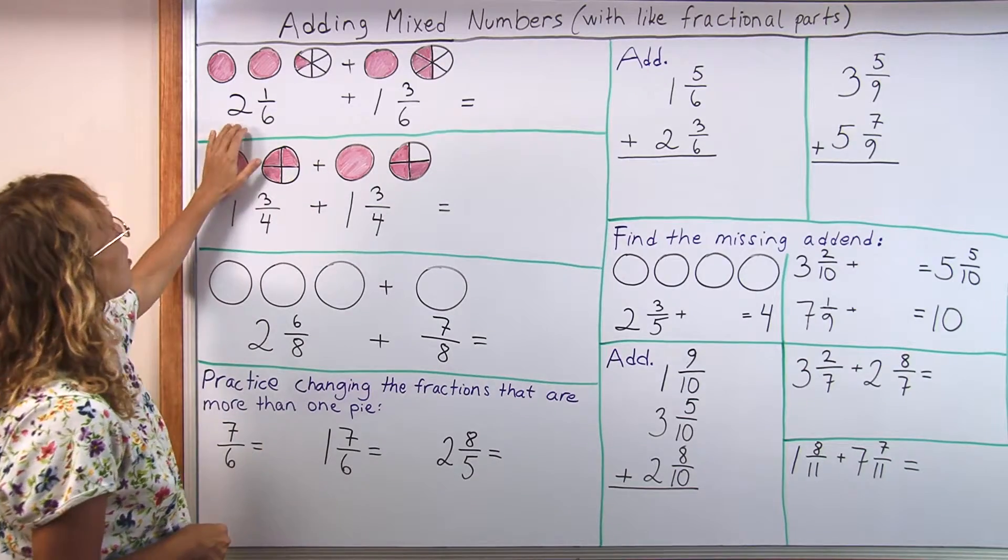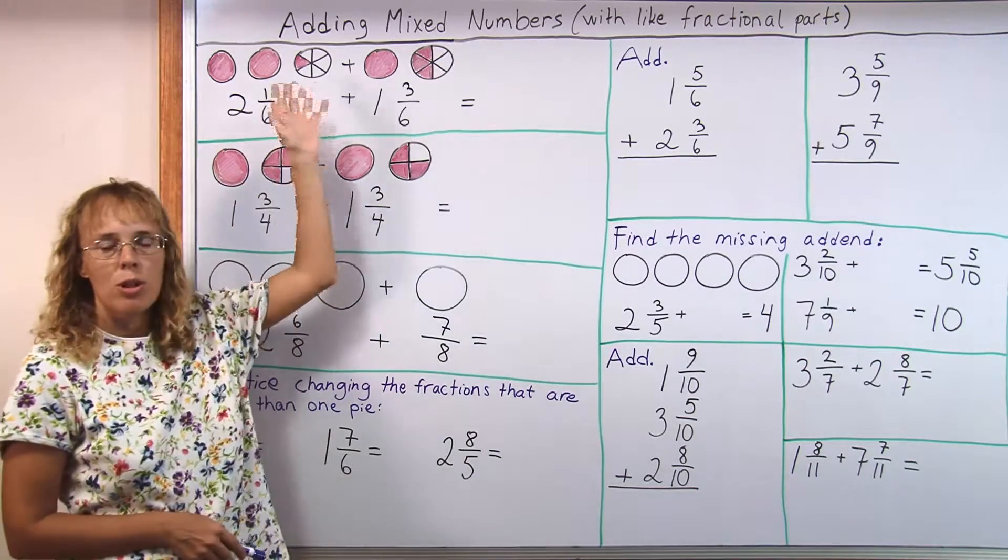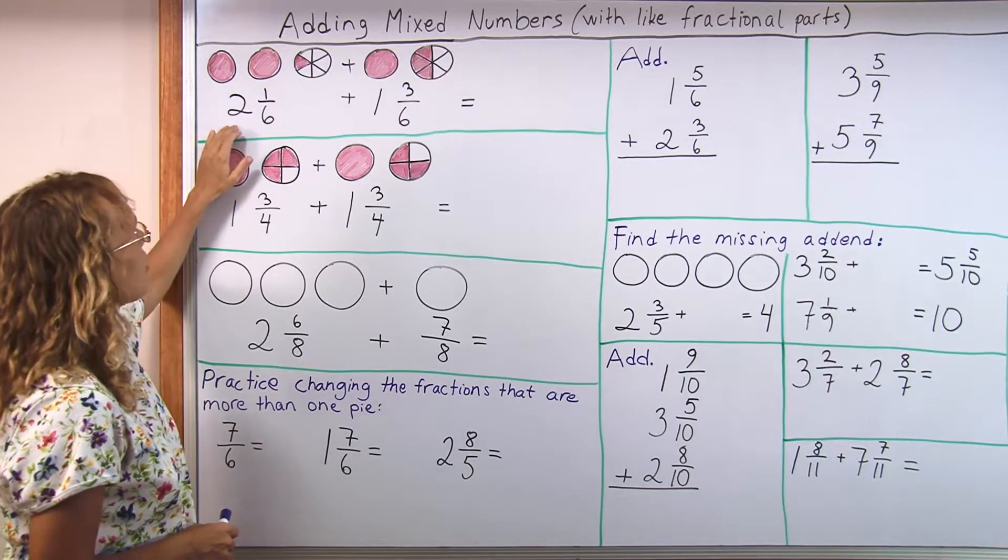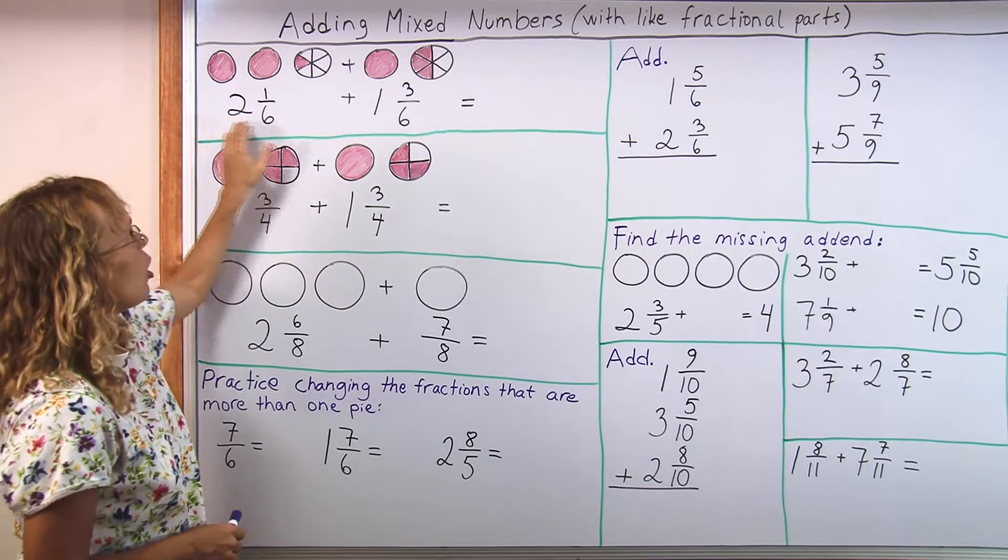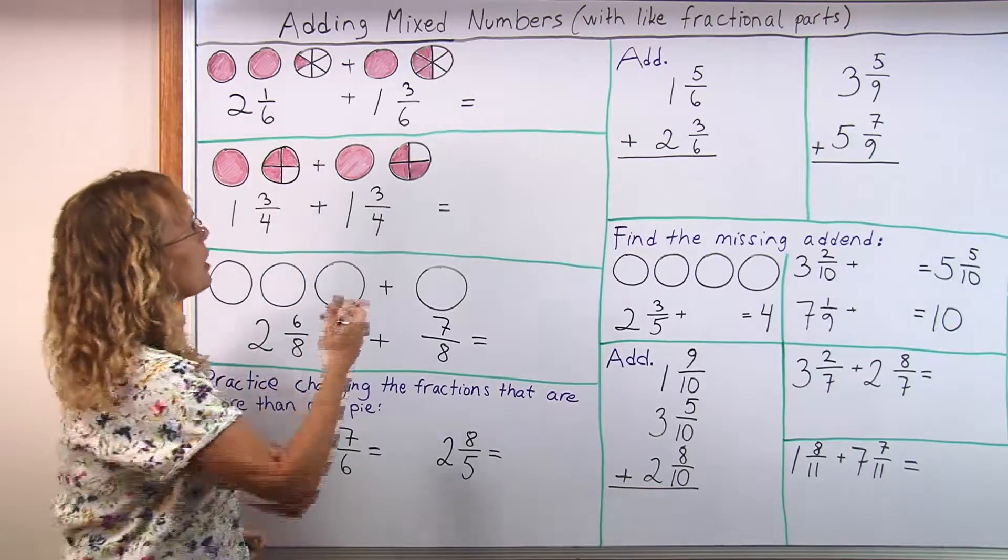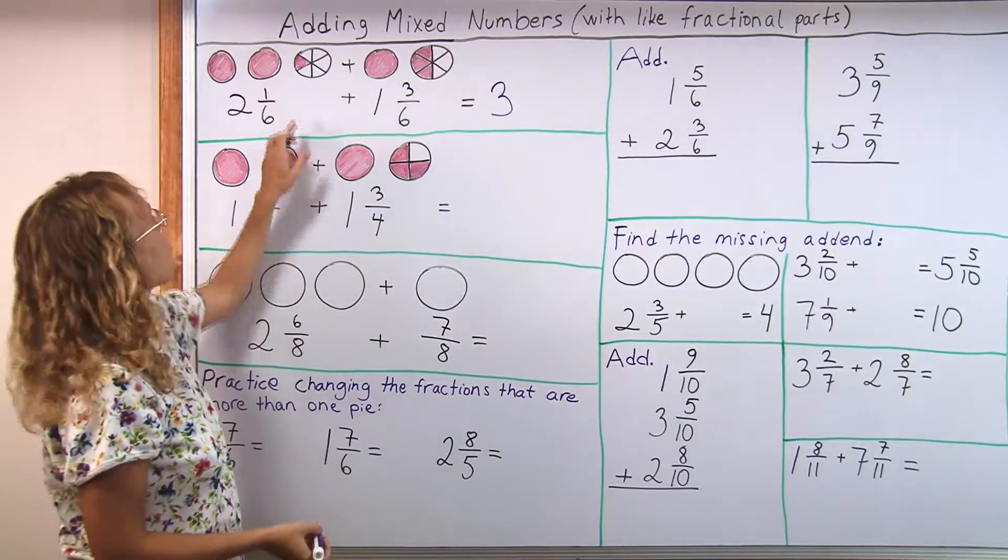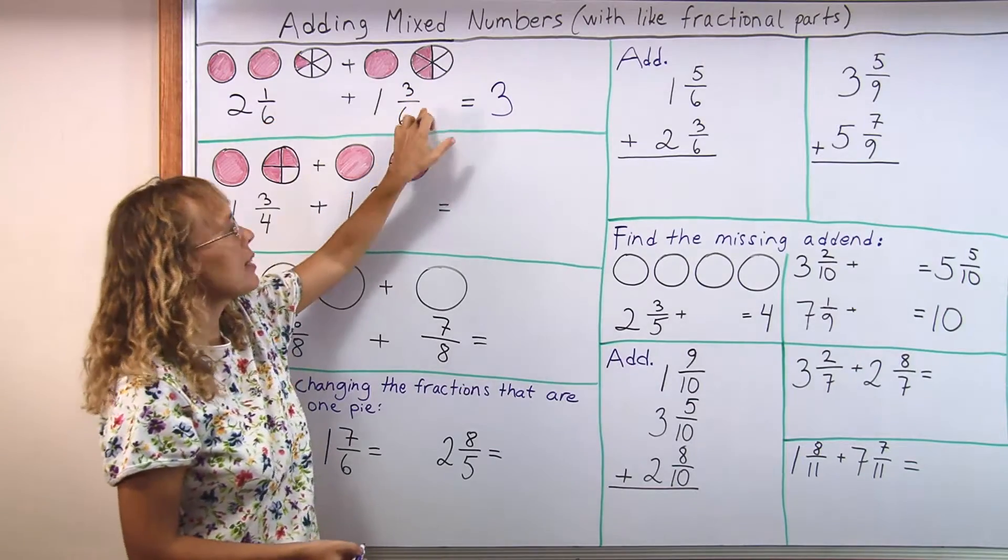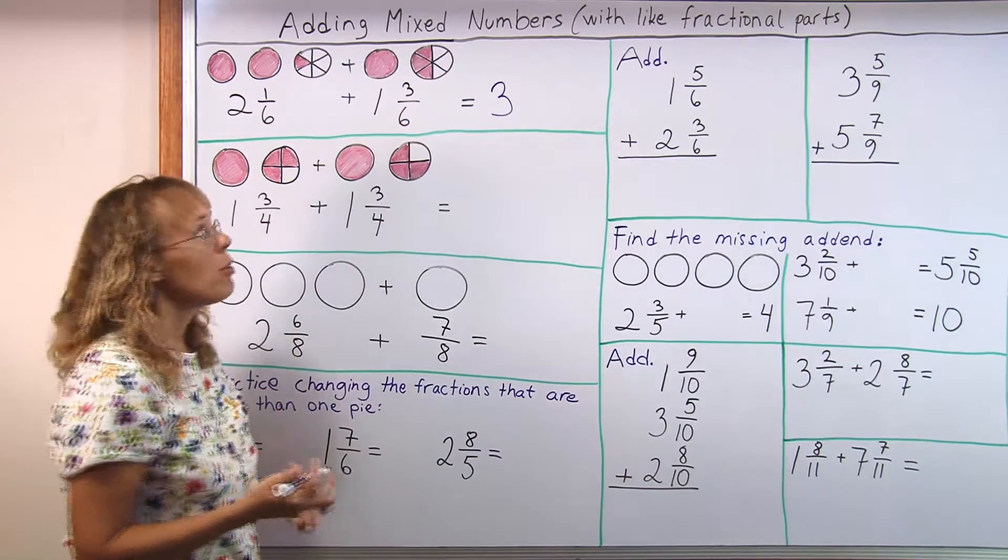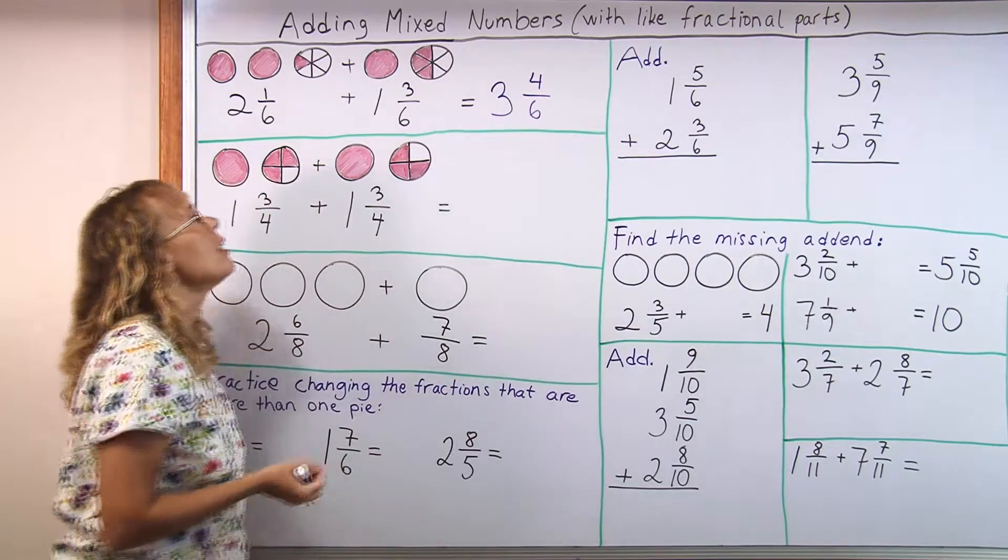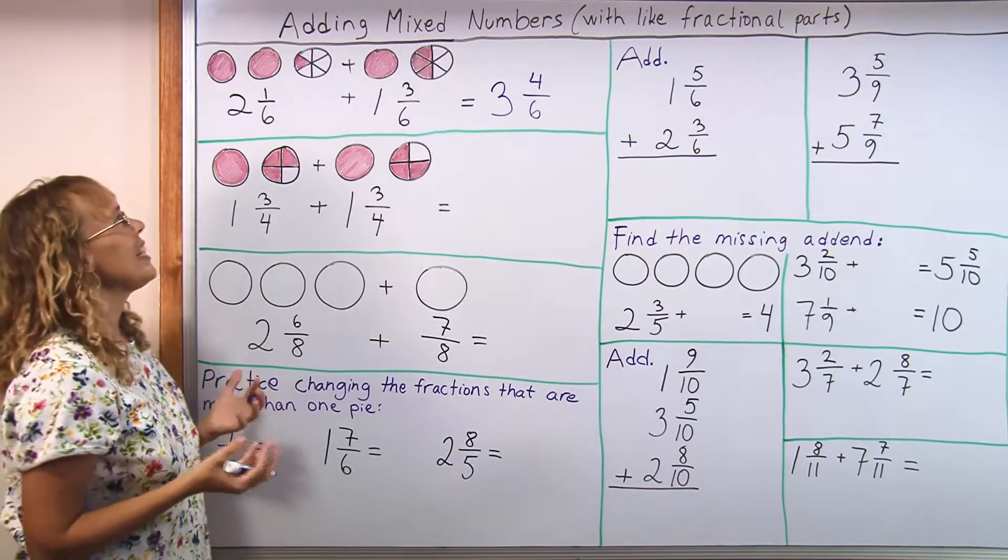Now here's an easy problem first, and it has a visual model, these pies here. So it is very easy to add, just add the whole number parts, 2 and 1 makes 3, and then look at the fractional parts, 1 sixth and 3 sixths makes a total of 4 sixths. There's nothing problematic about this problem, it is very easy.